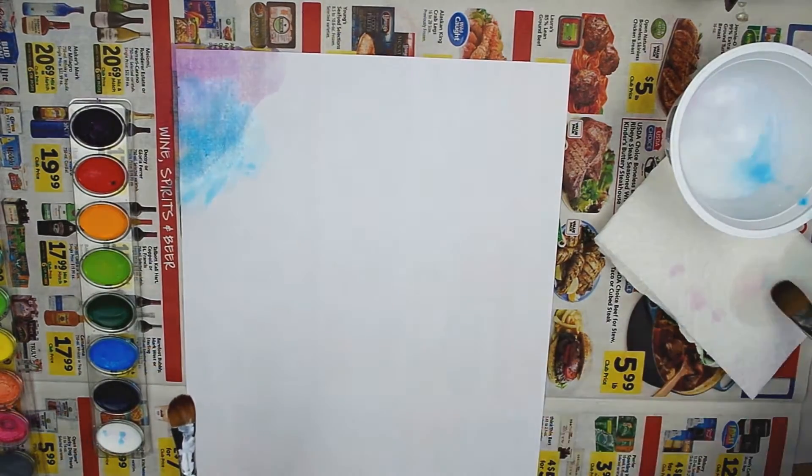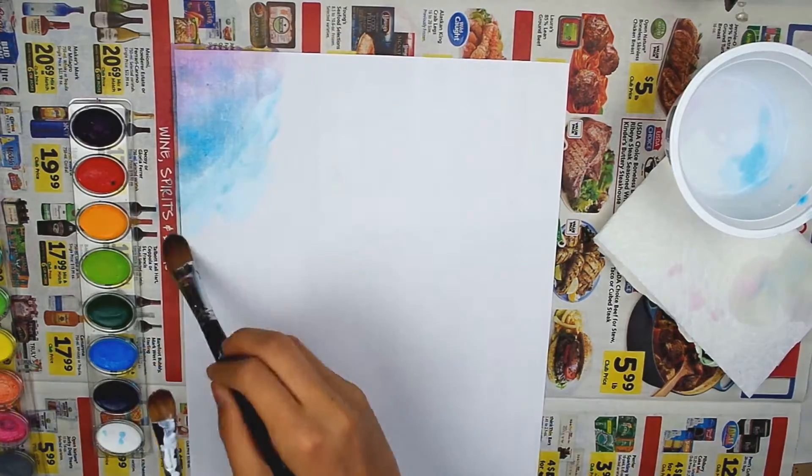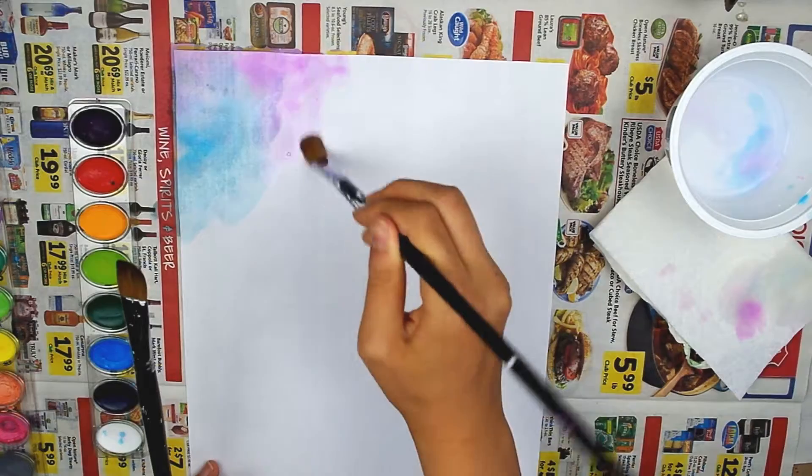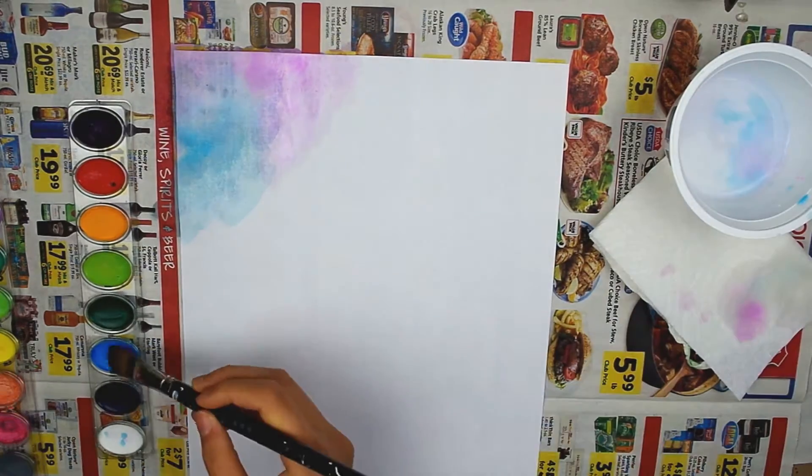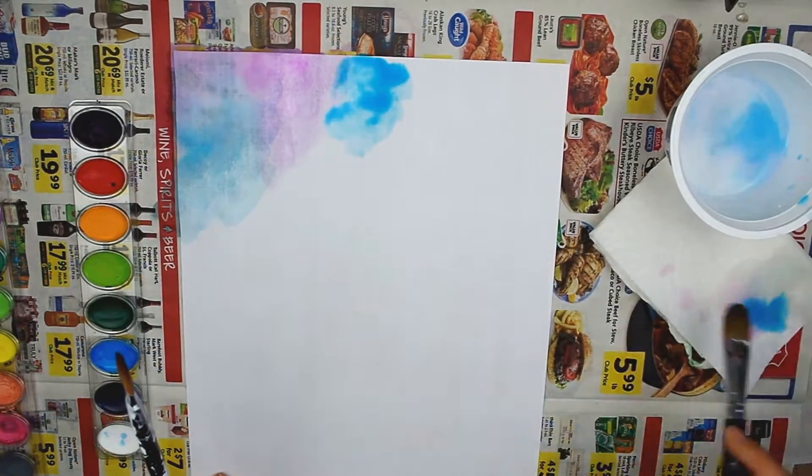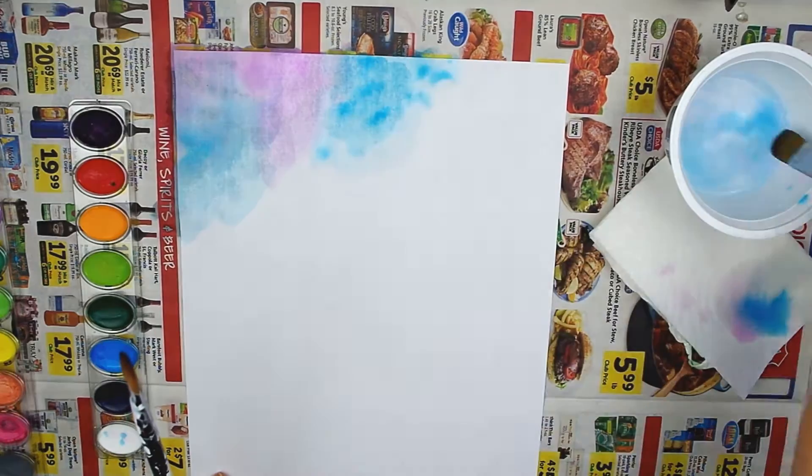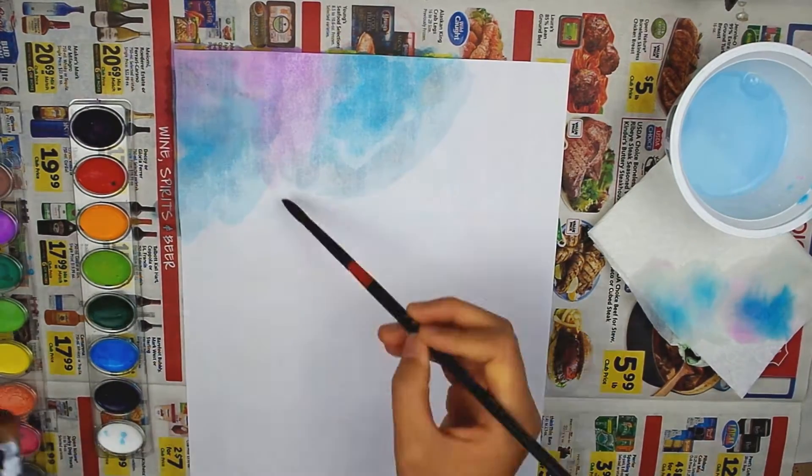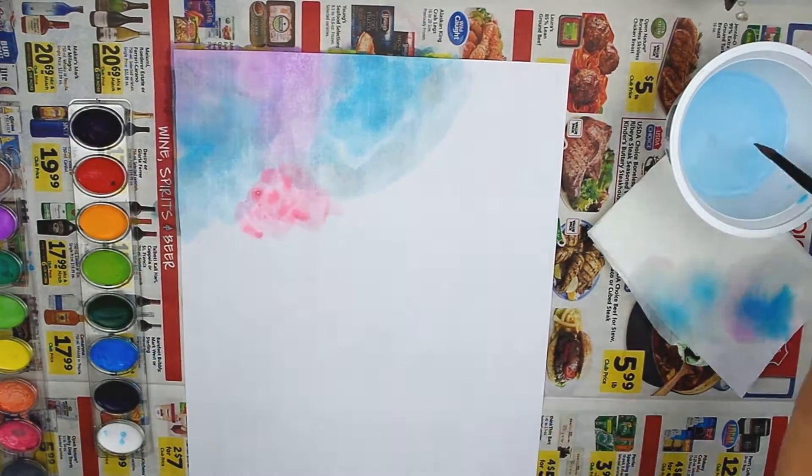You'll want to have a water cup handy, several brushes, and a paper towel to dab off any extra water. Make splotches of the colors on the page and use some water to spread it out. It doesn't need to be perfect. There's no right and wrong with how you arrange the colors, just arrange them in a way that you see fits.